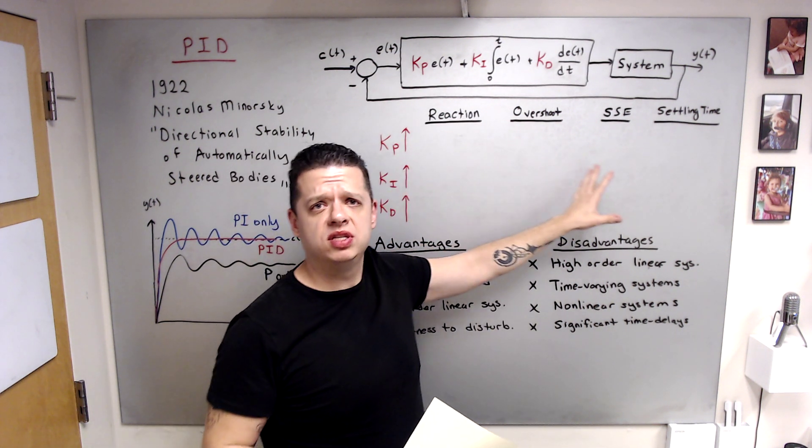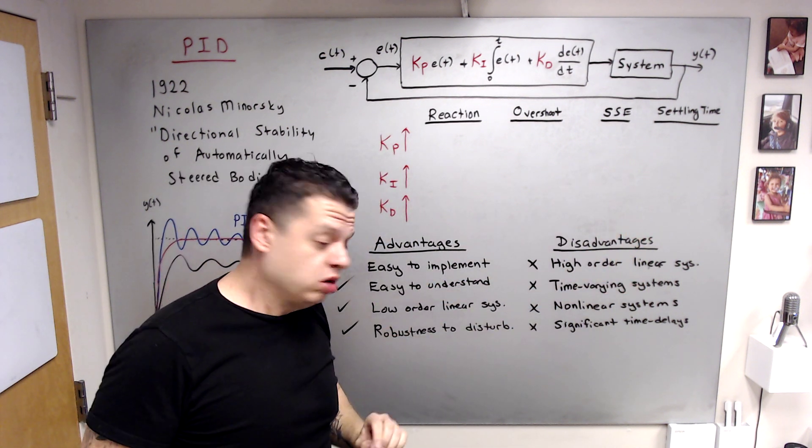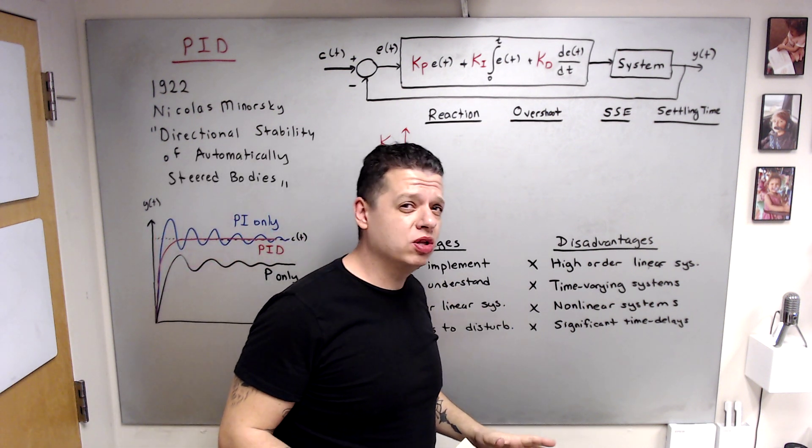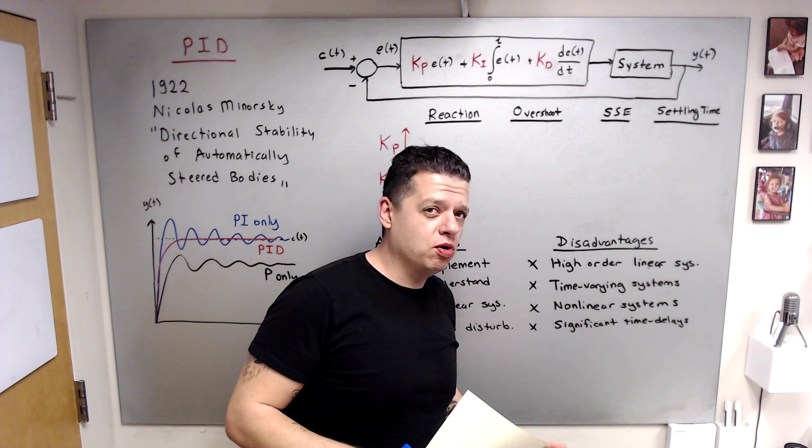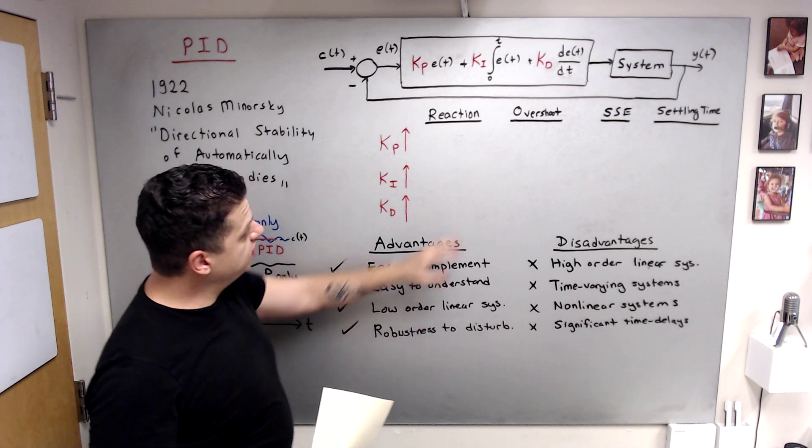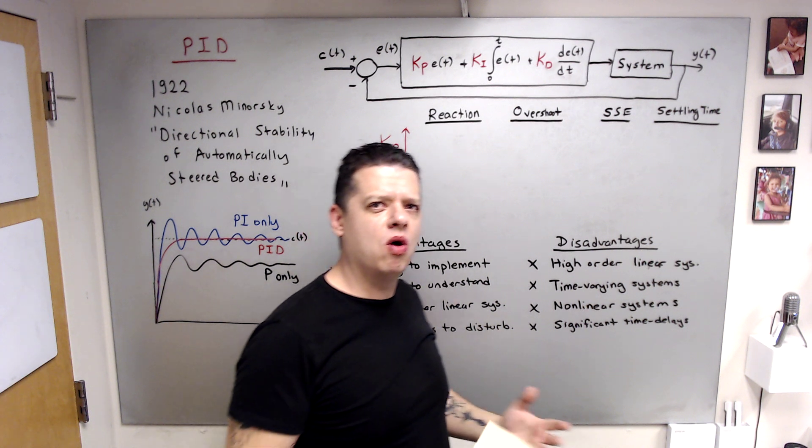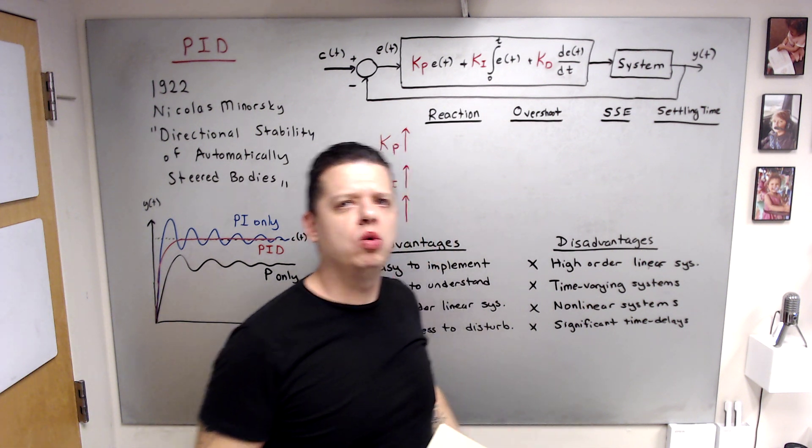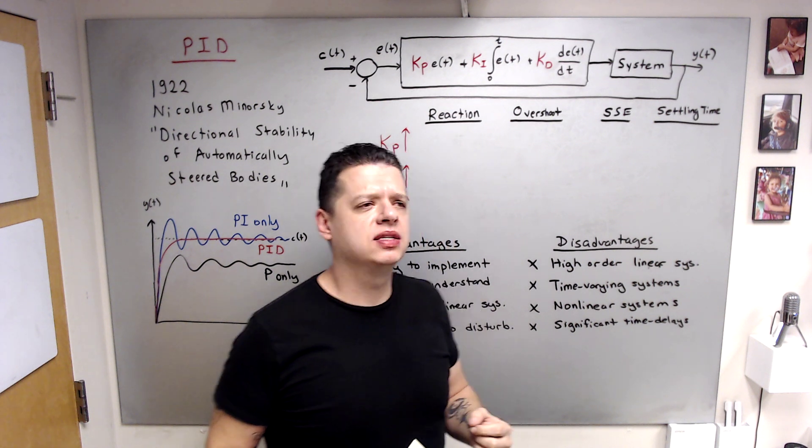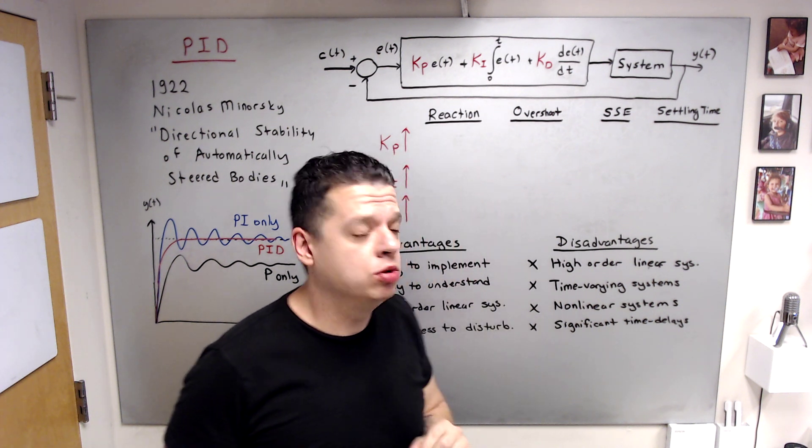What I mean by understand is what is the effect of gains to this rise time or reaction, overshoots, the steady state error and settling time. It generally works for low order linear systems. First order, second order, third order, maybe fourth order, but there is a limitation. And because of the integral term, it has inherent robustness to disturbances or constant or slow varying disturbances. And if it is tuned well, it also has some robustness to changes in plant parameters.